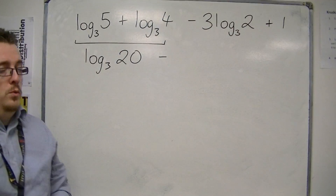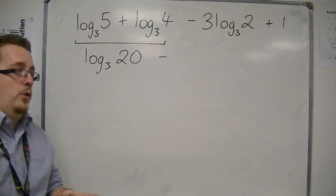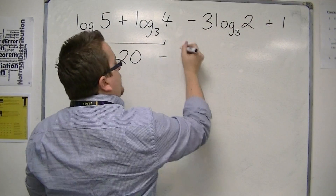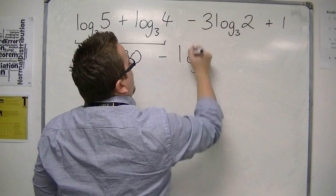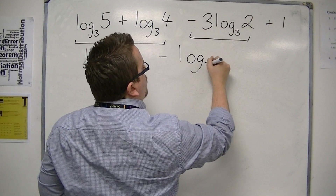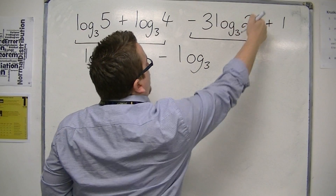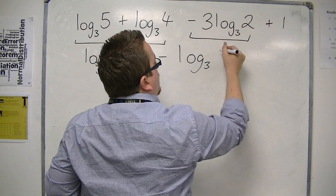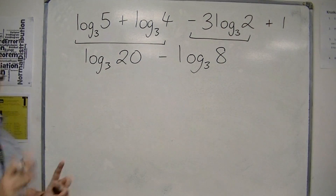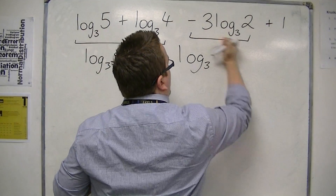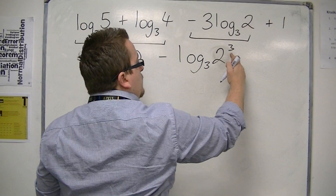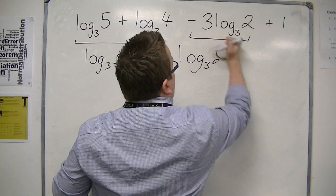Now, 3 log base 3 of 2 — I can use the third law to bring the 3 up to the power. So I can write this term as minus log base 3 of 2 to the power of 3, which is 8. The first step is to bring the 3 up as the exponent of the 2, and 2 cubed is 8.